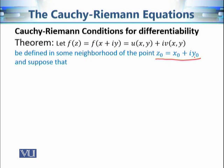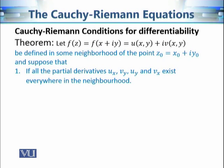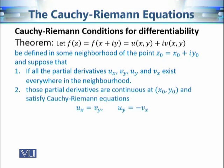The first condition is that the function must be defined in some neighborhood of the point z₀. This is necessary because we are calculating a limit as z approaches z₀, which is not possible if the function is not defined in a neighborhood of that point. The second condition is that the partial derivatives must exist in that neighborhood of z₀.